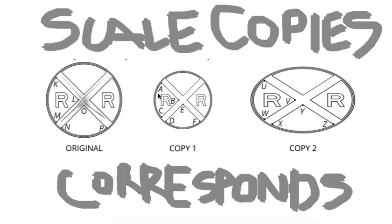We've got the x, which corresponds with the x in our two copies. We also have this r right here, which corresponds to the r right here, and the r right here.